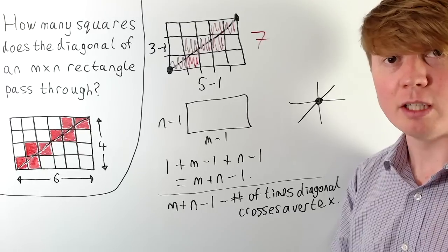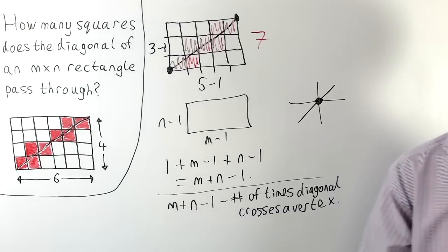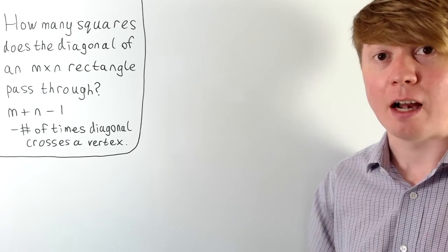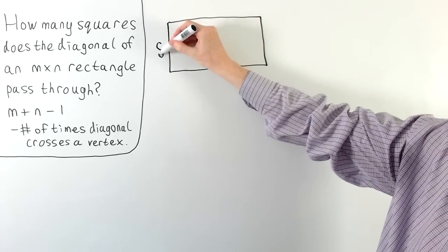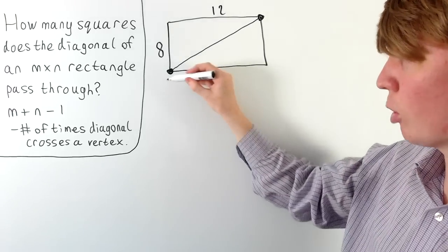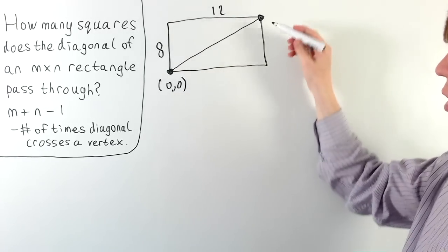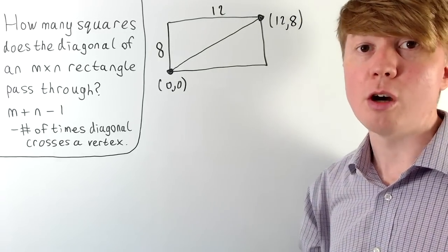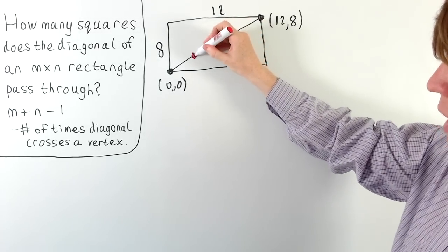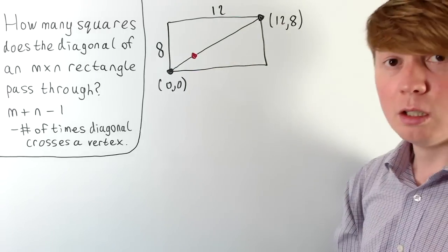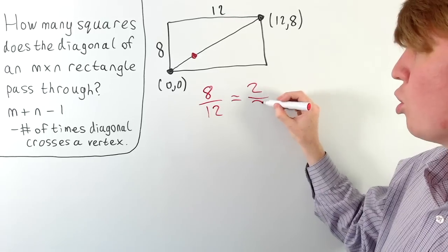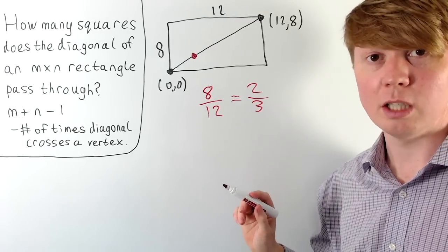Now we'll look at how to count, in terms of m and n, the number of times the diagonal crosses a vertex on the grid. There's a really neat way of dealing with this. We'll illustrate it first through an example. Take a rectangle which is 12 wide and 8 tall. We introduce coordinates: the bottom left corner is (0, 0) and the top right is (12, 8). We think about the gradient of the diagonal, which is 8 over 12, simplifying to 2/3.